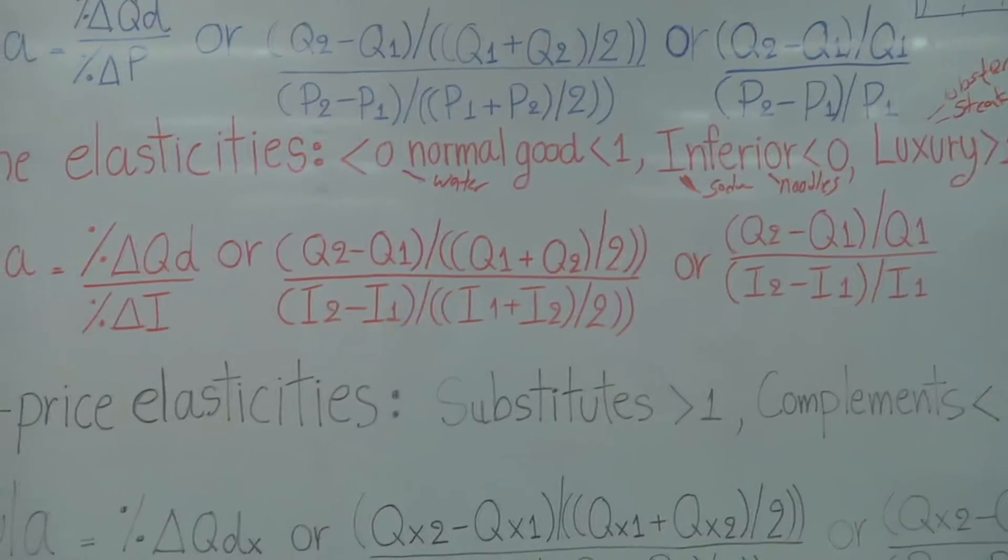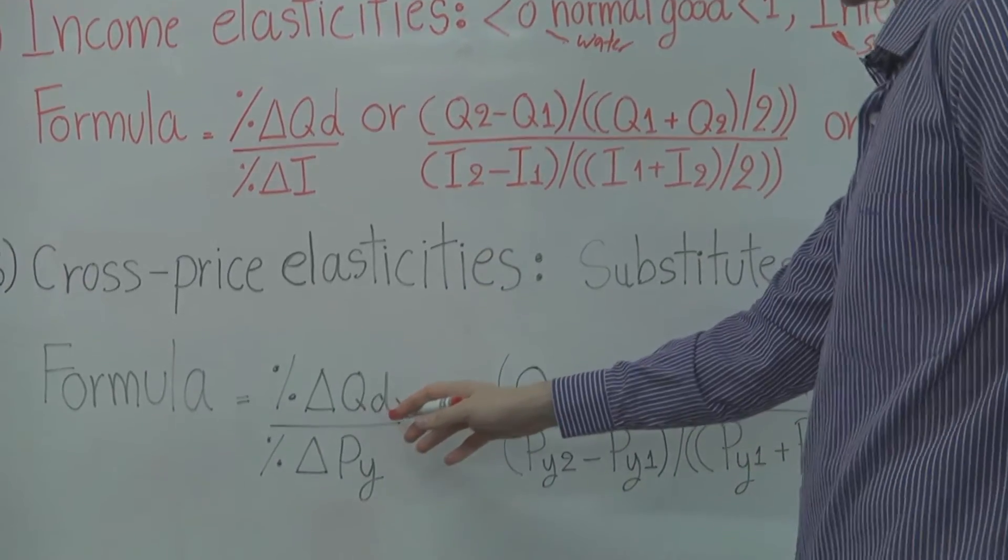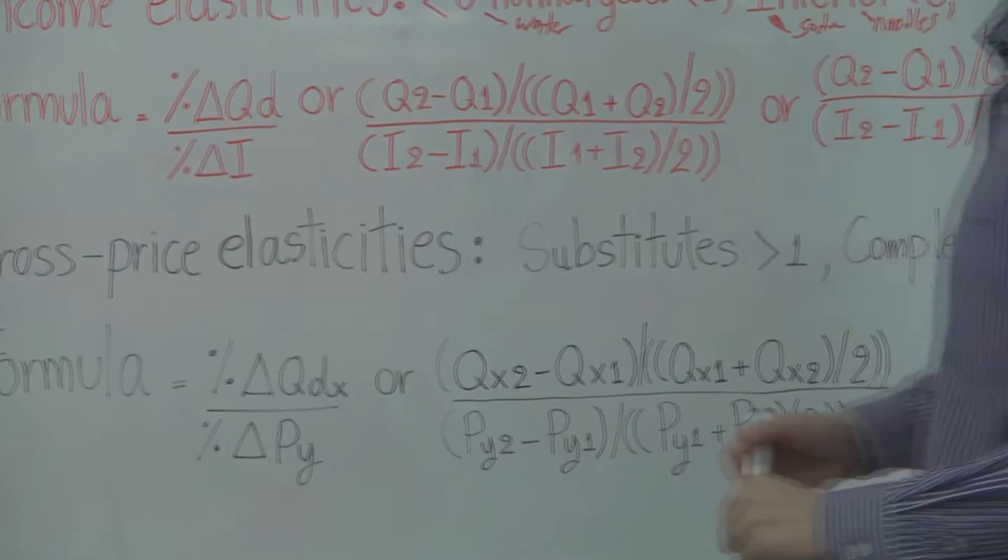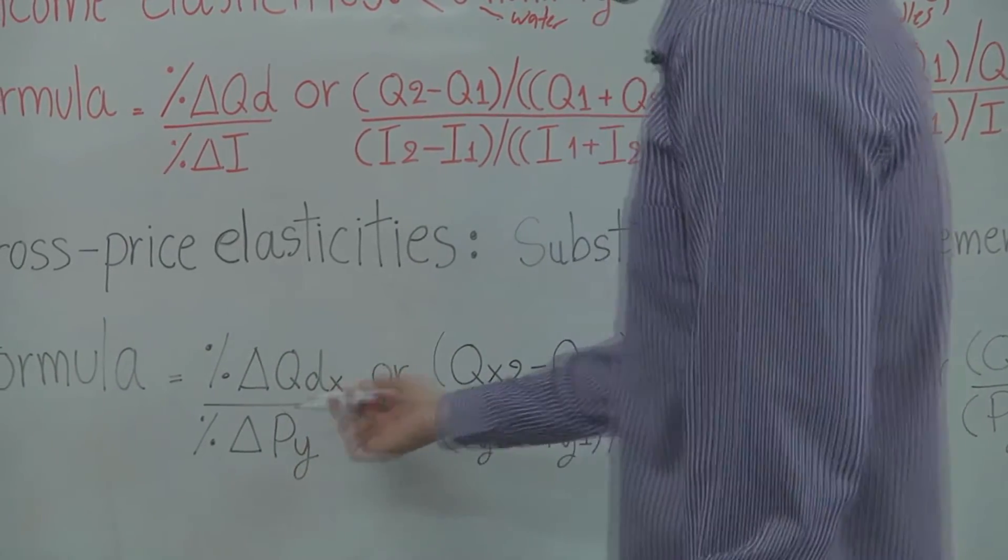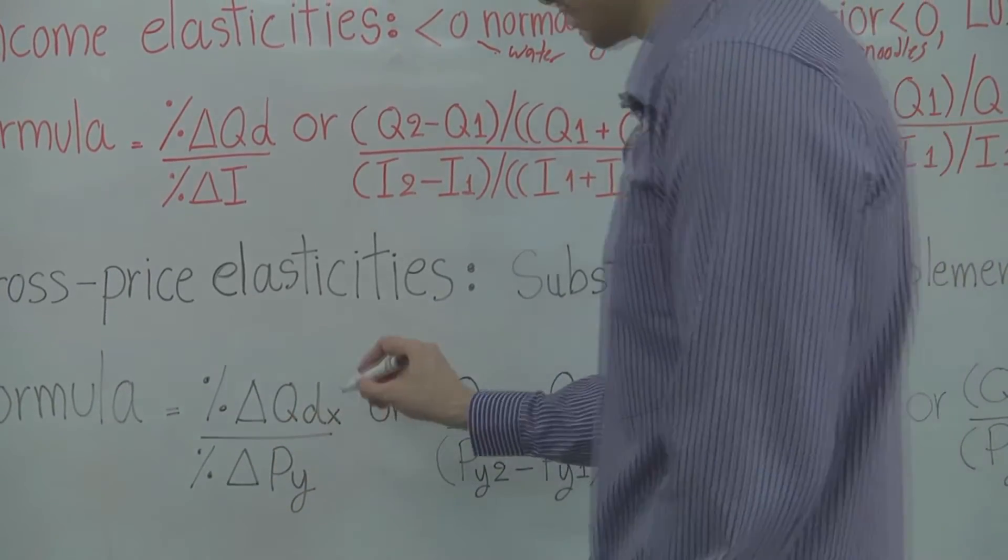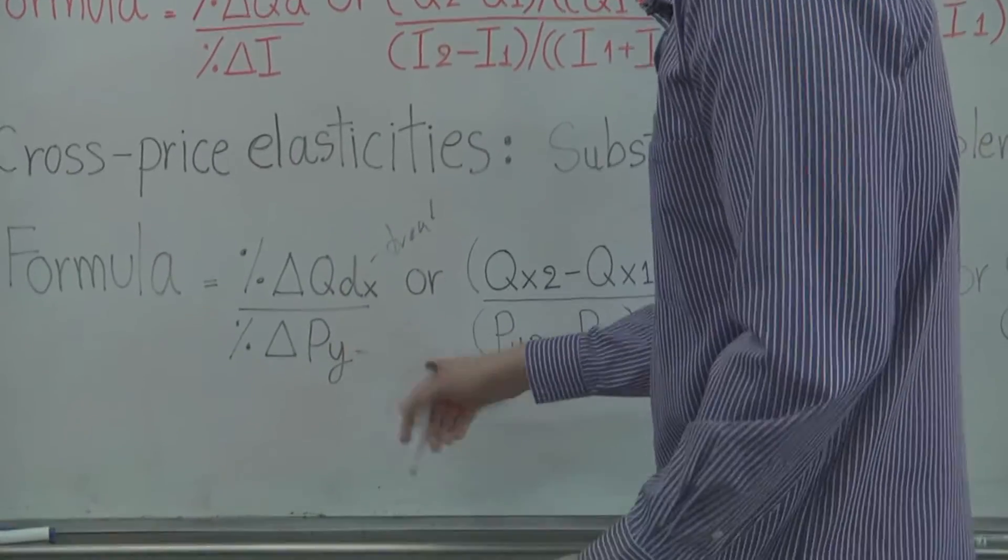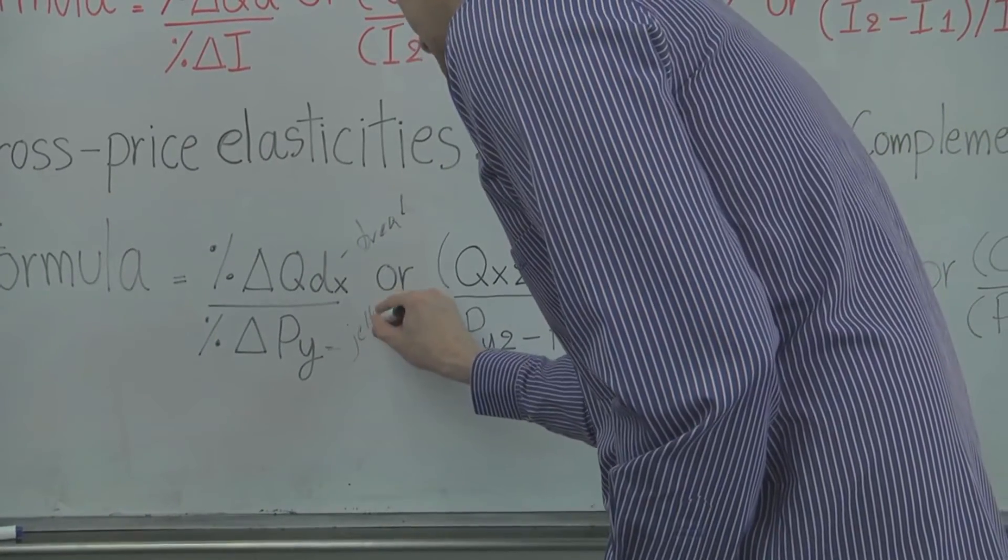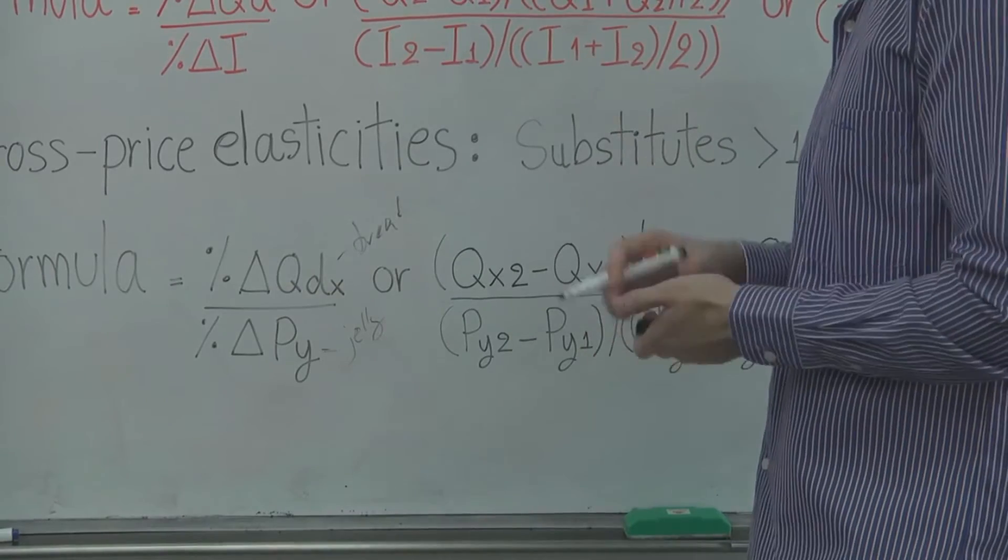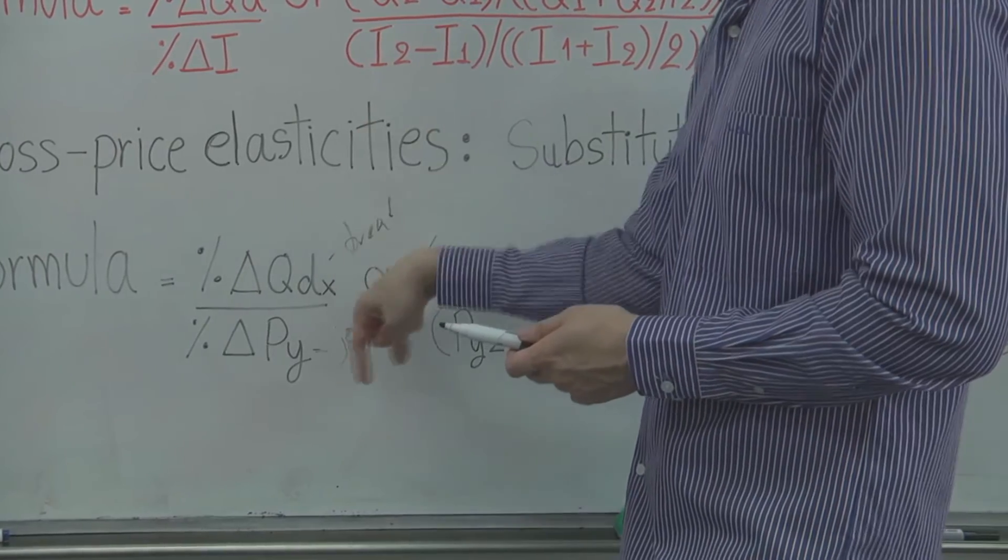The third one is cross-priced elasticities. We're looking at the percent change of quantity demand for good X divided by the percent change for the price of good Y. So maybe I would be looking at the quantity demand for bread. Maybe this is bread. And maybe the price of Y, maybe this is jelly. So if the price of jelly were to go up or ham or cheese, if these things were to go up, would the quantity demand for bread go down?